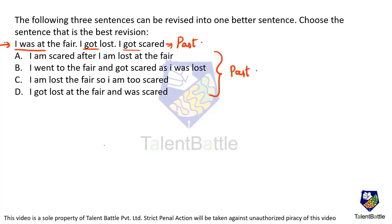Whenever you use 'am' — as in 'I am reading,' 'I am going' — 'am' is used for the present tense, not the past. So I can eliminate two options: option A is eliminated and option C is eliminated. Now between B and D we have to choose the best version.